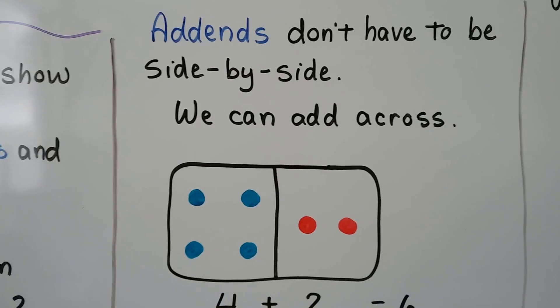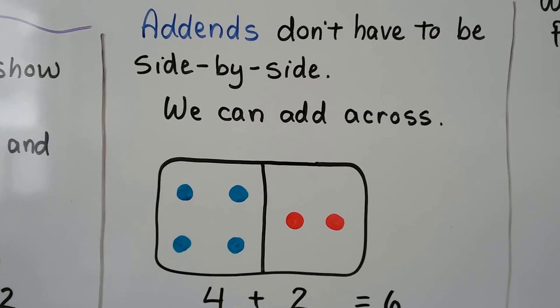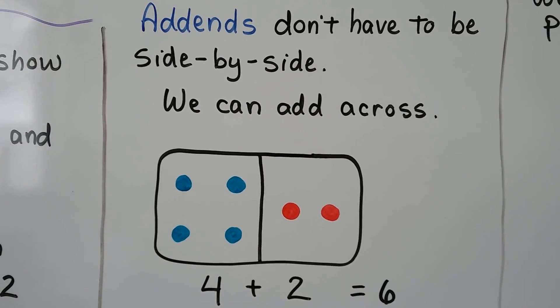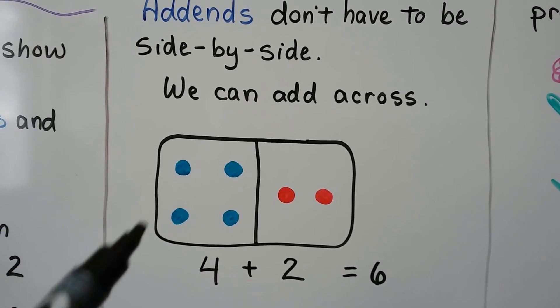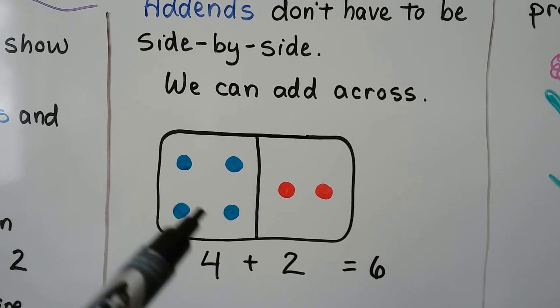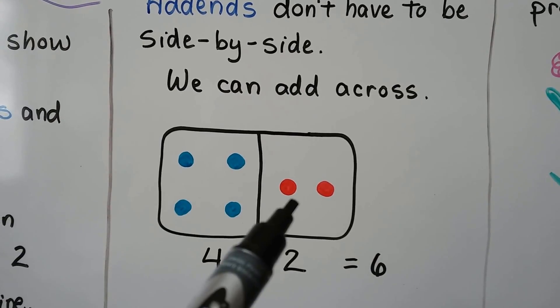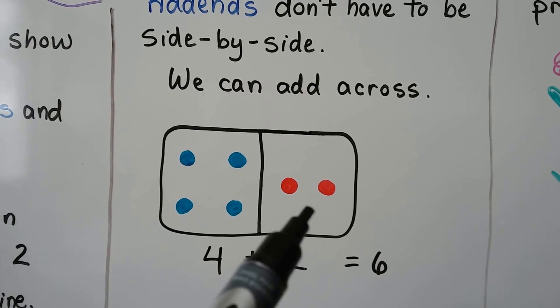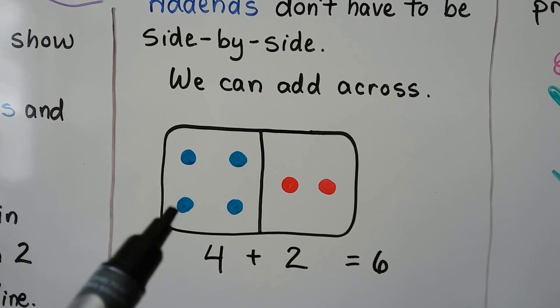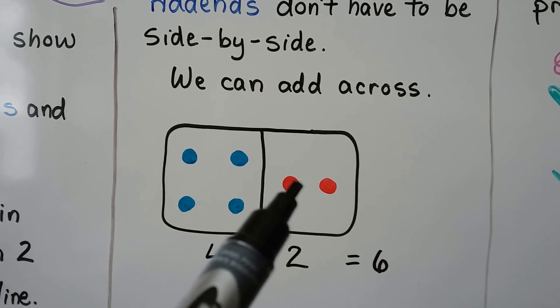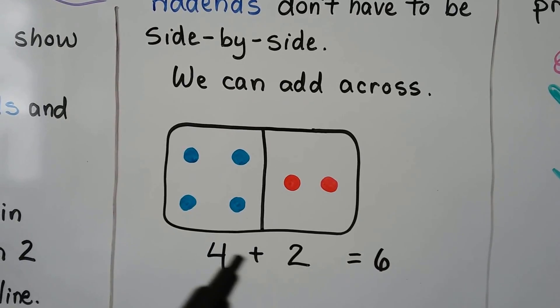Add-ins don't have to be side-by-side. We can add across. Four blue dots and two red dots makes one, two, three, four, five, six.